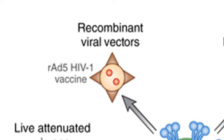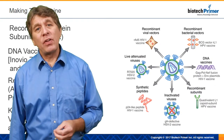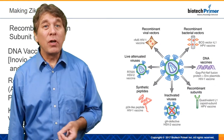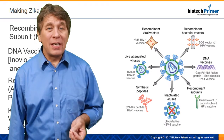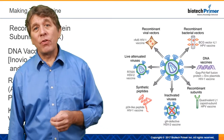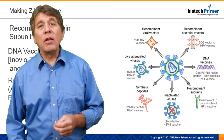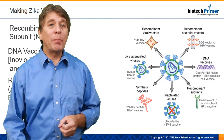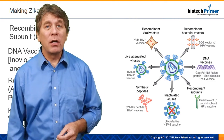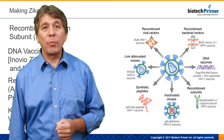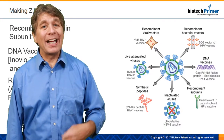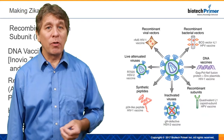Then we have our recombinant viral vector vaccine. This uses an adenovirus. Adenoviruses are not pathogenic — that is, they don't cause disease — so we replace some of the adenovirus DNA with DNA from the Zika virus. When we infect people with this virus, it won't make them sick, but it will produce Zika proteins, which will be recognized by the patient's immune system, generating an immune response and providing some protection.